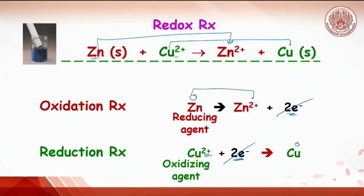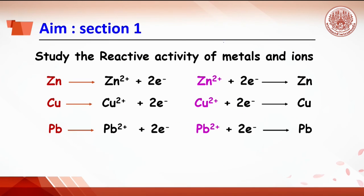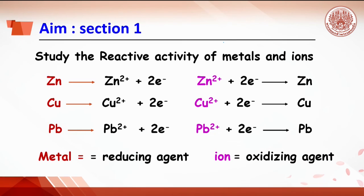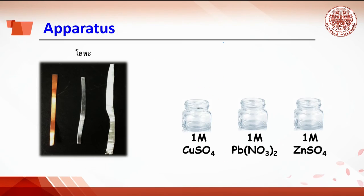With oxidizing agent and reducing agent, the aim of Section 1 is to study the reactivity of metals and ions in terms of oxidizing agent and reducing agent. Three metal strips — copper, lead, and zinc — are used.